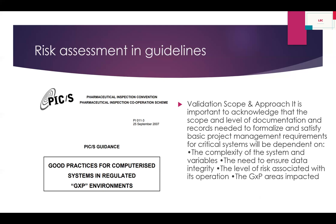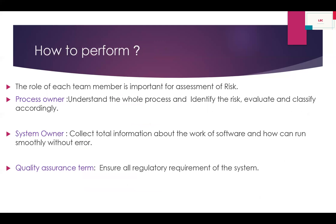The role of each team member is important for risk assessment. The process owner understands the whole process and identifies, evaluates, and classifies the risk — in our LIMS example, the QC or QA team. The system owner collects total information about how the software works and how it can run smoothly without error — our IT team and vendor. The quality assurance team ensures all regulatory requirements of the system are met. These three parties, including the vendor, are important for performing this.